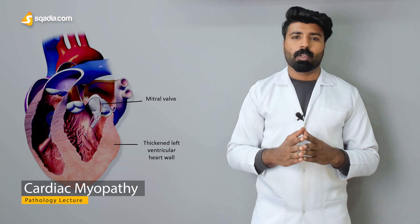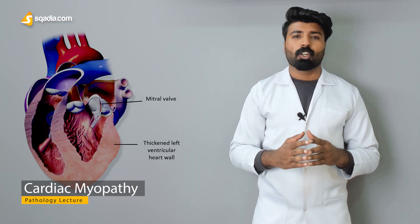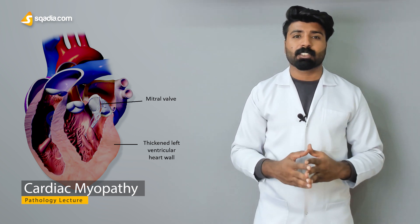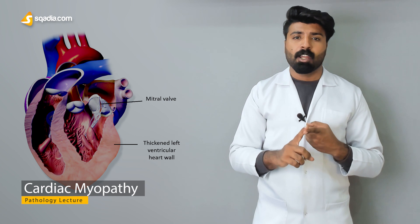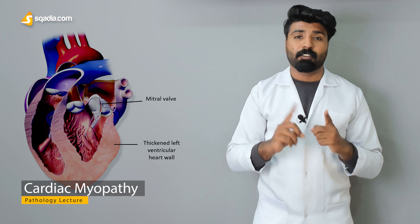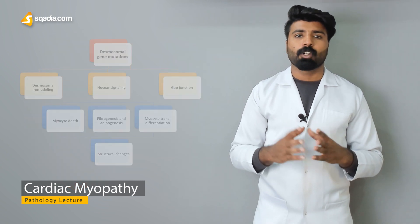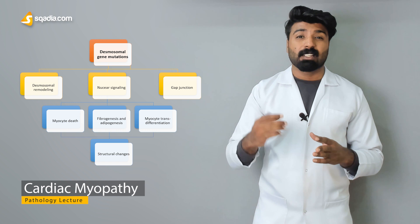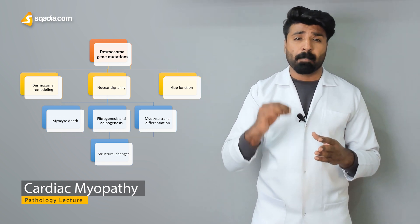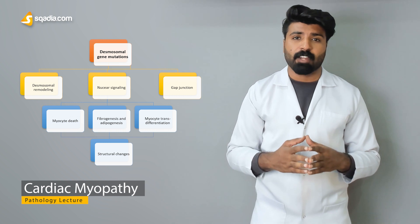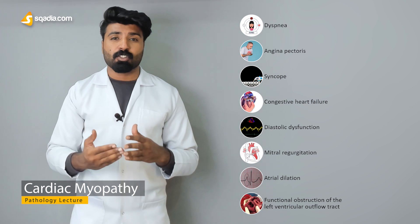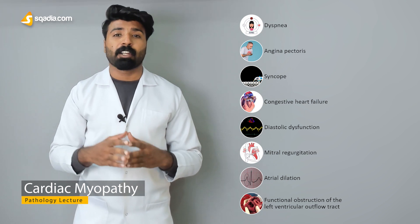Next, we'll cover hypertrophic cardiomyopathies and how they are differentiated from dilated cardiomyopathies in terms of pathology, gene mutations, and structural differences. We'll discuss how hypertrophic cardiomyopathy is the leading cause of death in people less than 35 years of age, and how it manifests clinically in terms of symptoms.